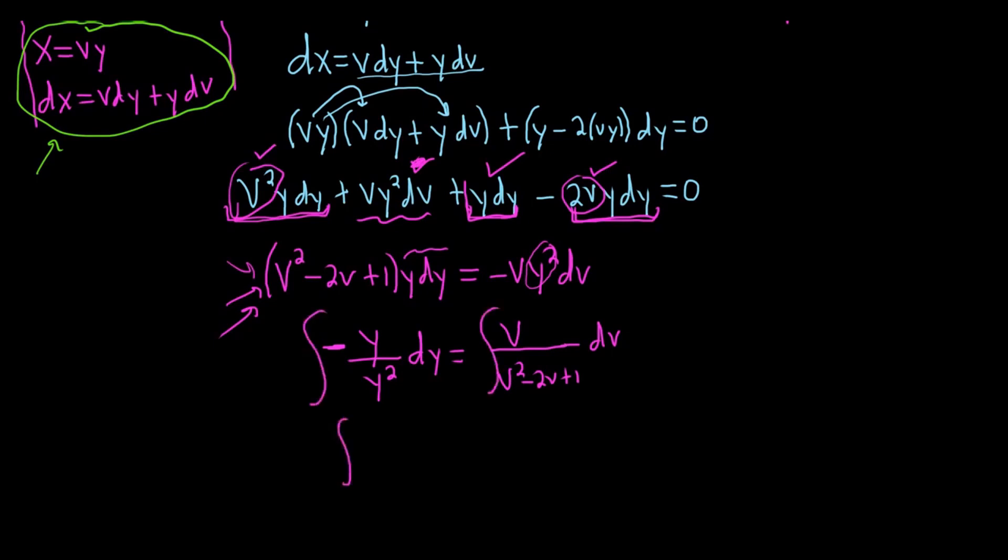Now we can integrate both pieces. So this will be negative 1 over y dy. This is an easy integral. This is going to give us a natural log of the absolute value of y, so no issues there. Equals v over, and then ideally you would notice that the bottom piece is this. It's just (v minus 1)². You can check by multiplying it out. If you square the v, you get v². If you multiply the negative 1 and the v, you get negative v, and you double it. That gives you the middle term. And you square the last one, and it gives you the last term. So the formula is (a minus b)² is a² minus 2ab plus b².